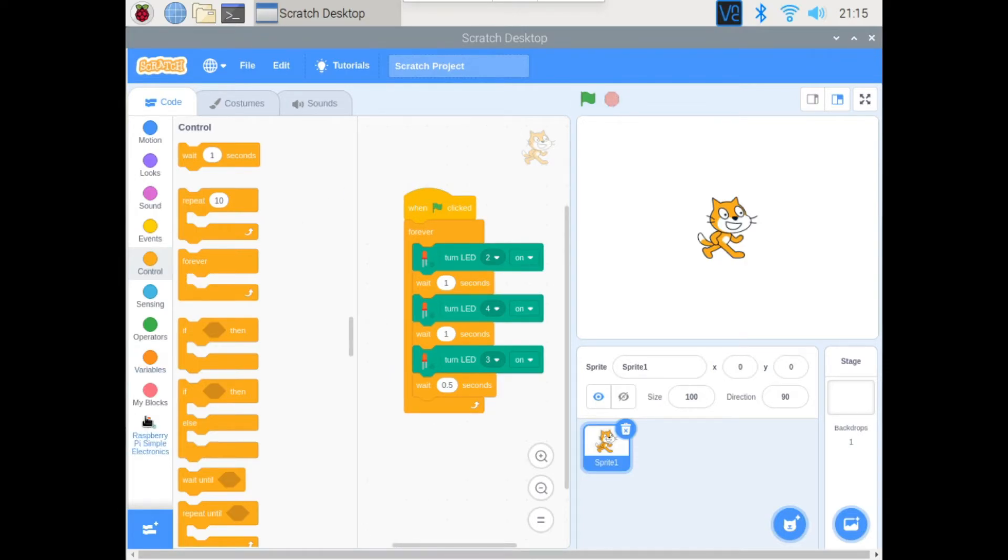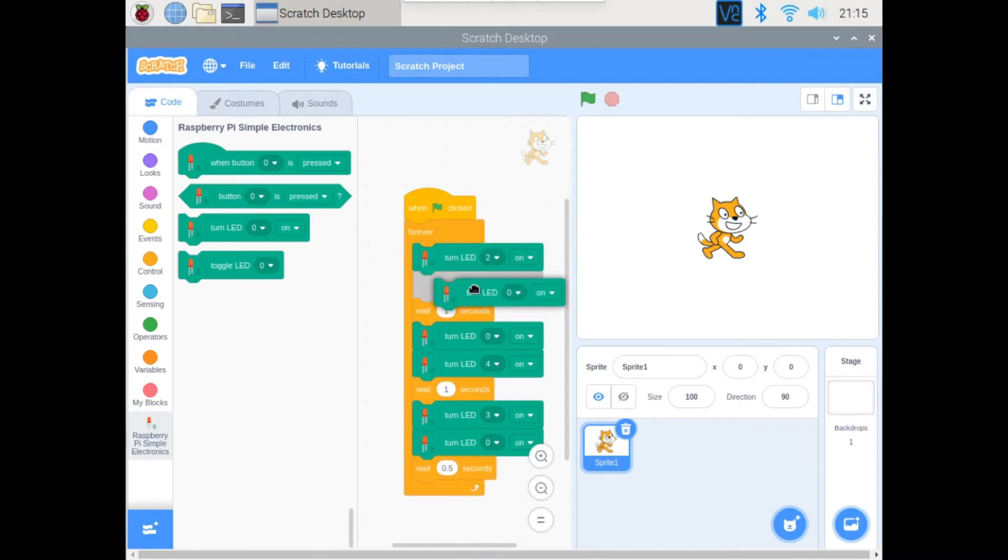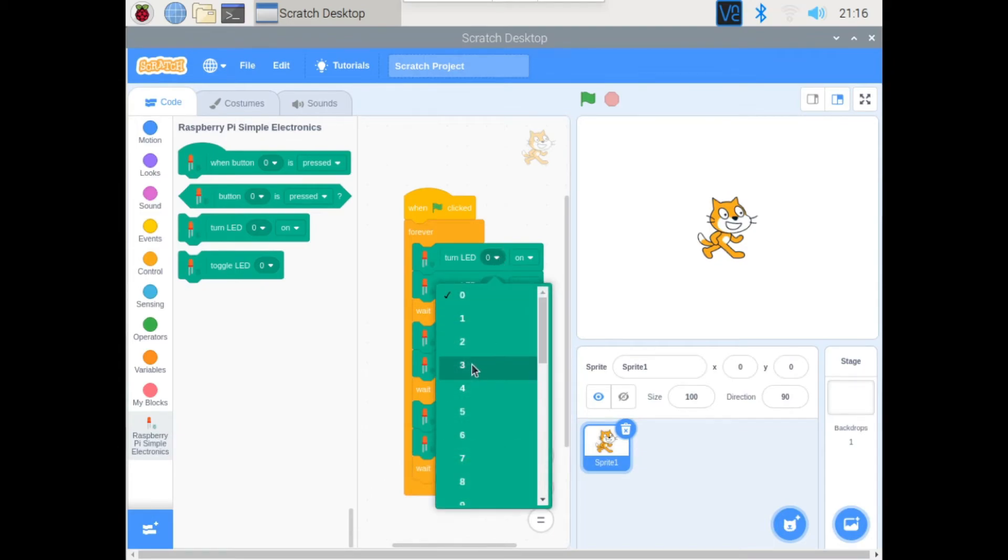Then we'll go to the new palette and then we'll add three of these. And then we'll change this, so this should be 3 because here we're turning 3 on and then here we turn 3 off. This should be 2, change this to off. This should be 4, change it to off. So now when we run our program we should see a different result.